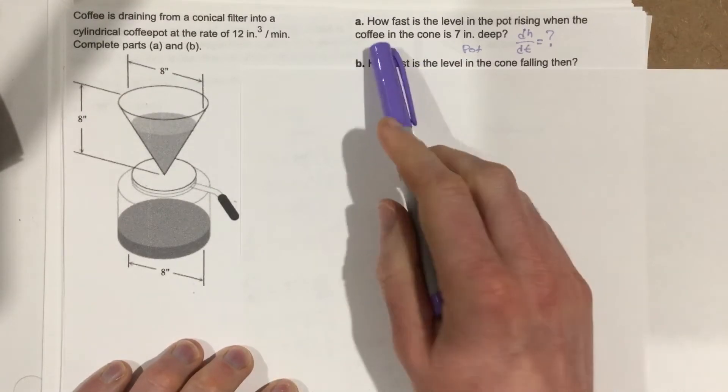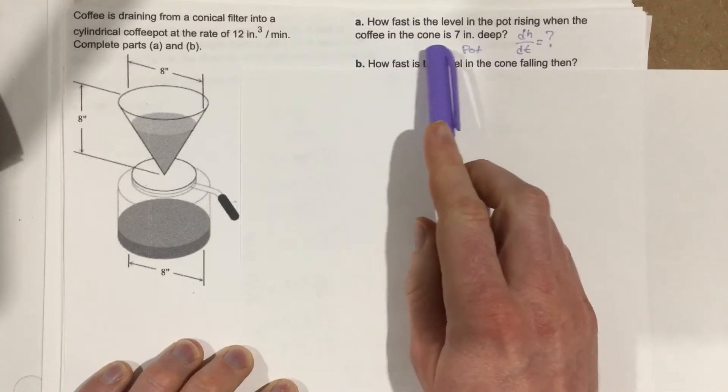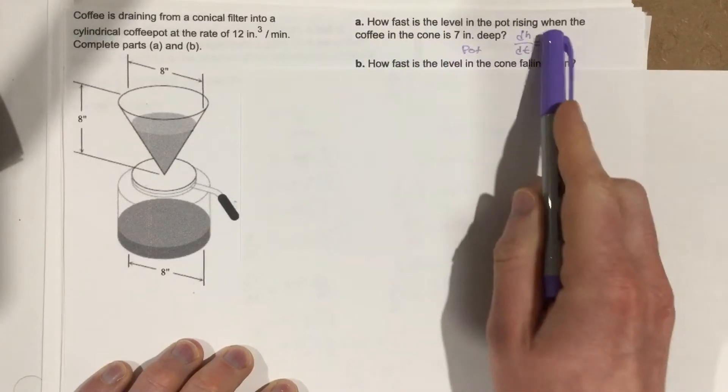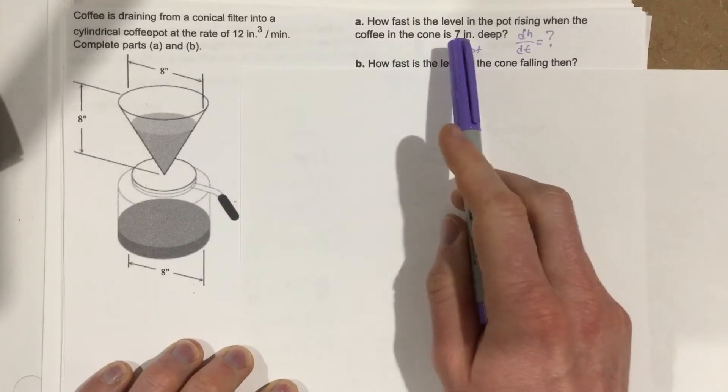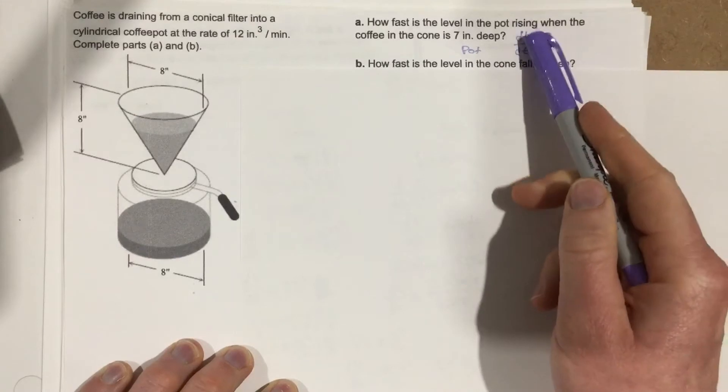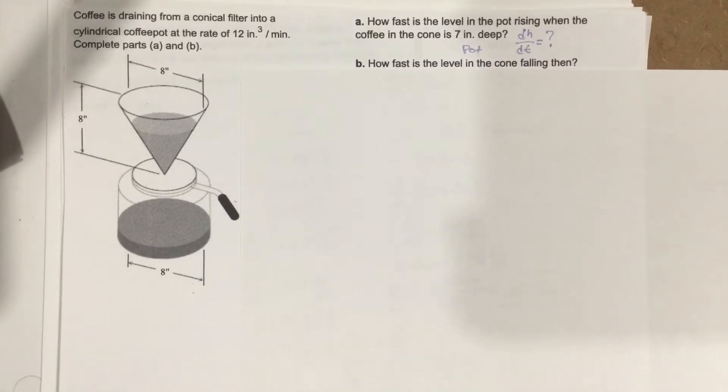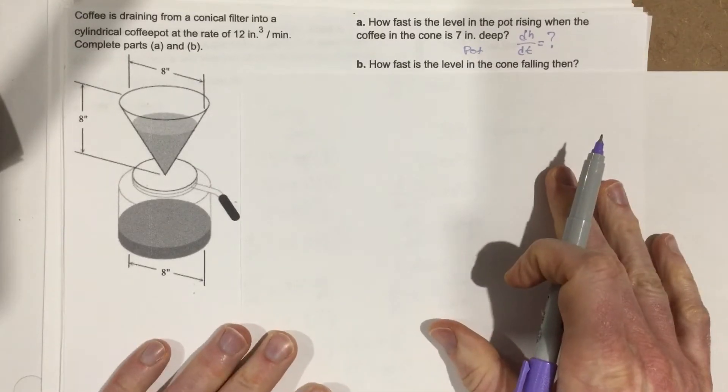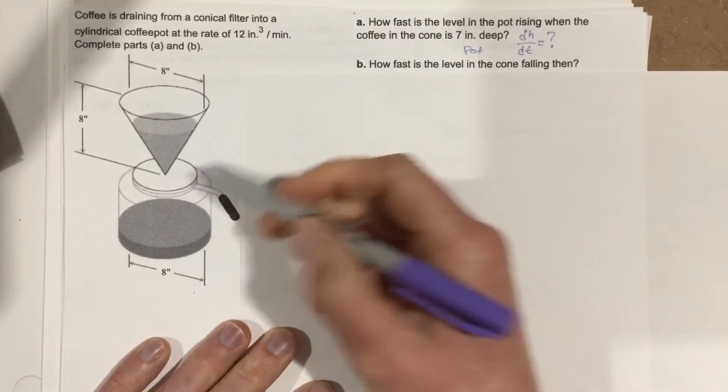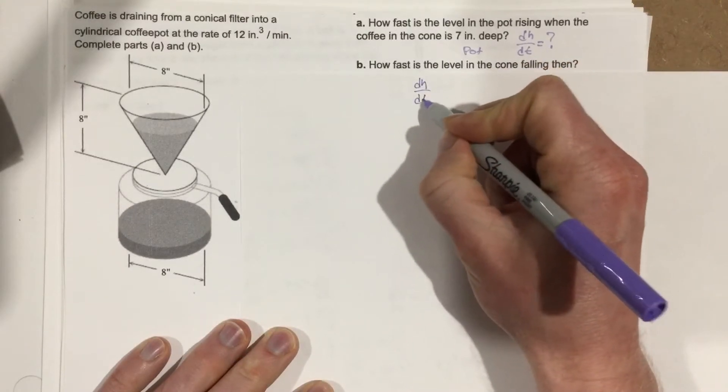Part A asks how fast is the level in the pot rising when the coffee in the cone is seven inches deep. They're asking for the change in height with respect to time, dh/dt. Part B asks how fast is the level in the cone falling then. Again, they're asking for dh/dt but this is for the cone.